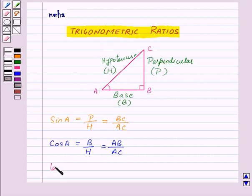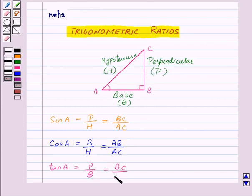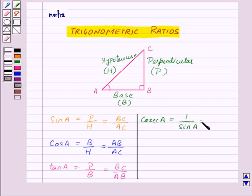Now tan A is equal to P upon B, that is perpendicular upon base, so this will be BC upon AB. Now cosecant A is 1 upon sin A, so this will be H upon P, that is hypotenuse upon perpendicular, which will be AC upon BC.